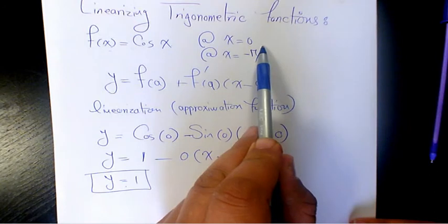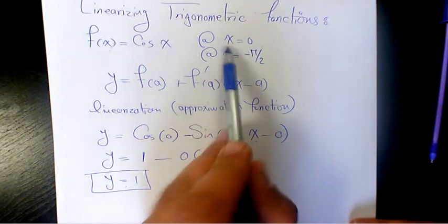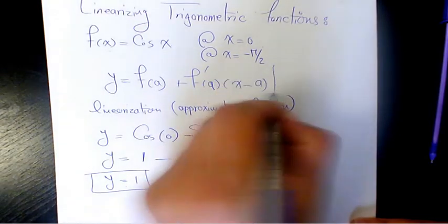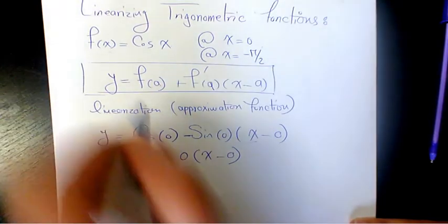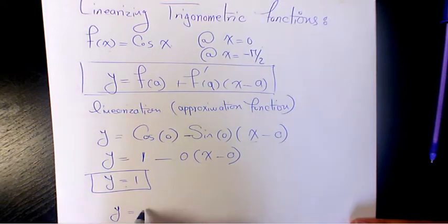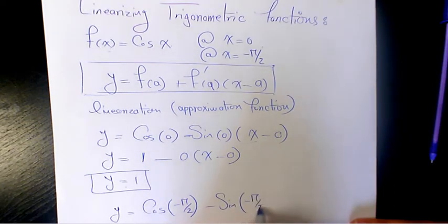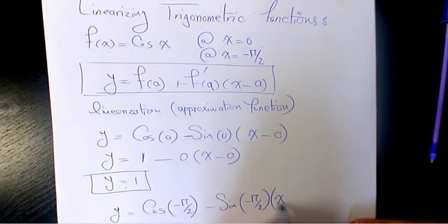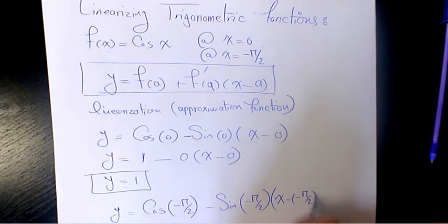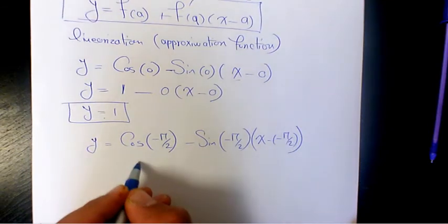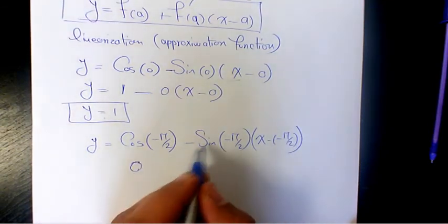Now let's find out at x equals to negative pi over 2. We need to follow exactly the same function. I'm going to say y equals to cosine of negative pi over 2 minus sine negative pi over 2 times x minus negative pi over 2. Cosine negative pi over 2 is 0, sine of negative pi over 2 is negative 1.